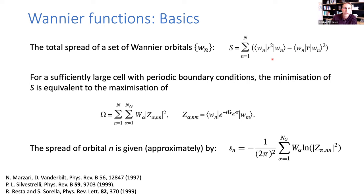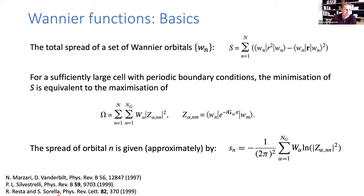Just some basics of Wannier functions — I'm sure you already know this. This is the spread functional, which is the sum of the second moments of the set of functions. For a cell with periodic boundary conditions that is sufficiently large, minimization of this spread is equivalent to maximizing the omega functional, which I will refer to as the spread functional. The spread of a Wannier function number n can be calculated from the C matrix elements according to this formula.